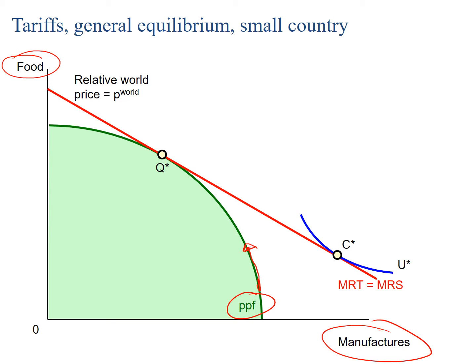From our microeconomics courses we know that when a curve is tangential to the budget constraint — we'll call relative price levels the budget constraint, BC — we know that we have an equilibrium. In this diagram we can see two equilibria. The PPF tells us about production, whereas utility curves tell us about consumers and what they consume.